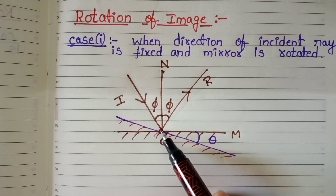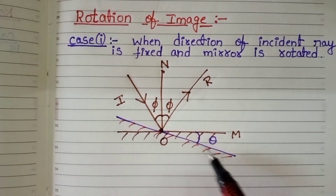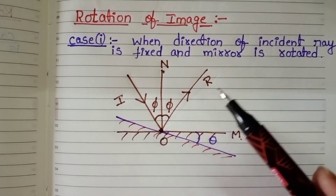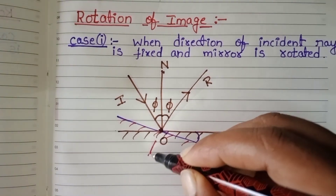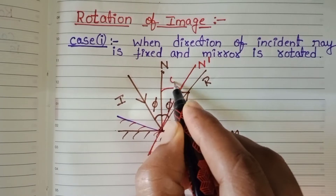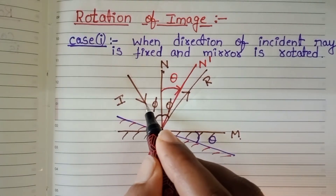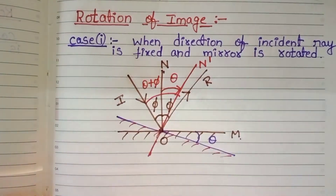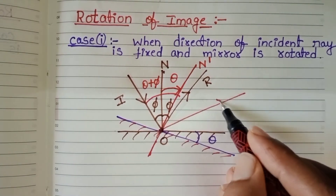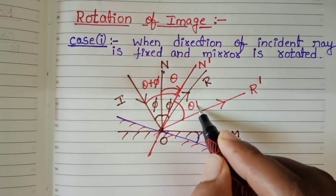Now, this incident ray remains the same in its position. Then, what about the normal? The normal is always perpendicular to the plane surface. So the normal also rotates in the same direction as the mirror with the same angle of rotation. This is the final position of the normal. The angle of rotation of the normal is also theta. Now, the angle between the incident ray and the normal changes to theta plus phi. Then, what about the reflected ray? The reflected ray also changes its position. This is the final position of the reflected ray. The angle between the normal and the reflected ray is also theta plus phi.